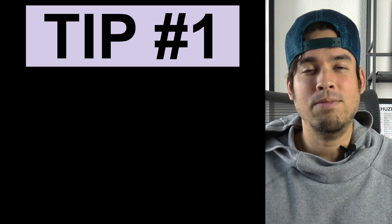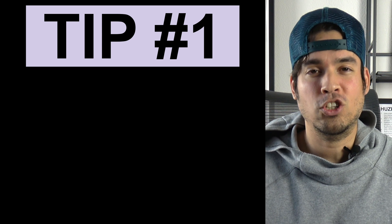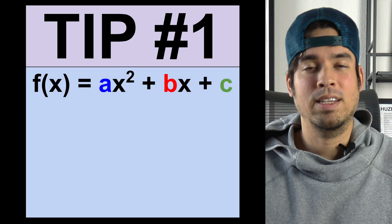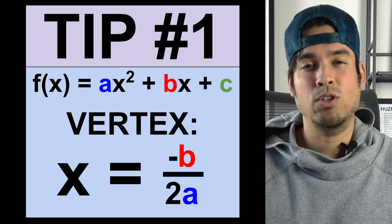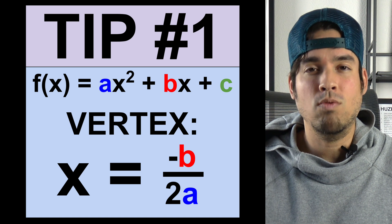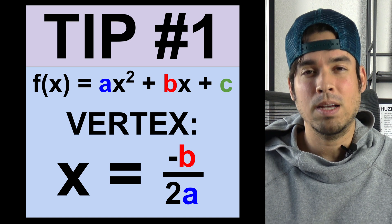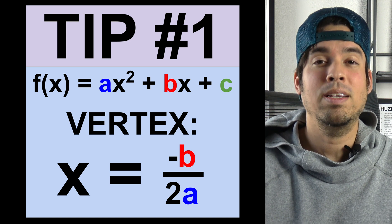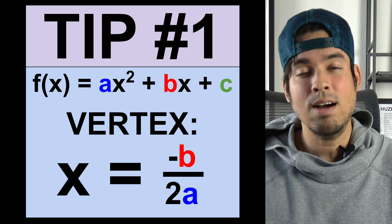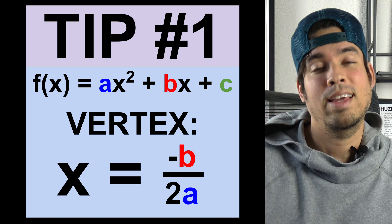The first tip that you've got to know is when you're trying to find the vertex of a quadratic function that is in standard form — meaning ax squared plus bx plus c — the x value of the vertex is at negative b over 2a. This will save you a tremendous amount of time. You don't have to put it in vertex form. Your vertex is simply at negative b over 2a, comma whatever the function value is when you plug in that x value.